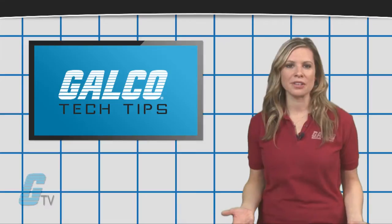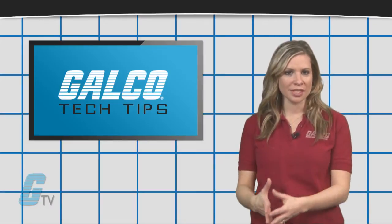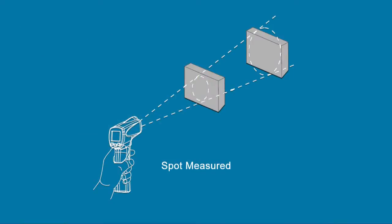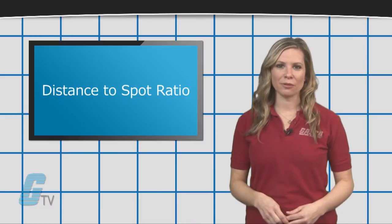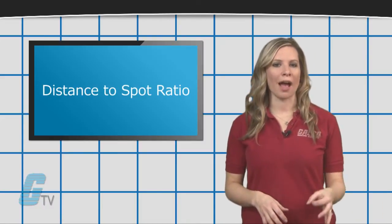One of the common types of infrared thermometers use a spot area to measure, which is an area proportional to distance of the user and the object being measured. This is commonly referred to as the distance to spot ratio.